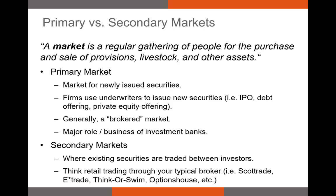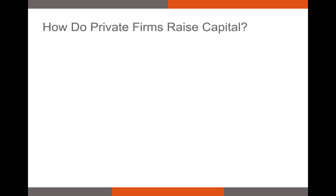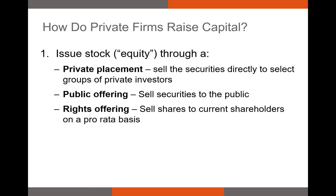Typically, investors trade securities via a broker like Fidelity or E-Trade. Bonds can also trade on bond exchanges, which are a bit more underground. Now let's talk about how firms raise capital in the primary market. There are several ways that firms can issue equity to investors. The first way is through a private placement, where essentially a firm is issuing equity directly to individual or institutional investors, giving them some discretion with respect to who is buying these shares.